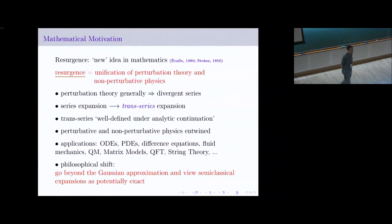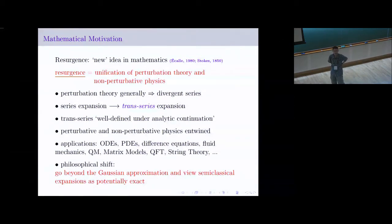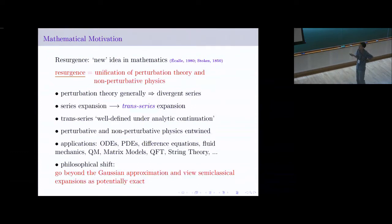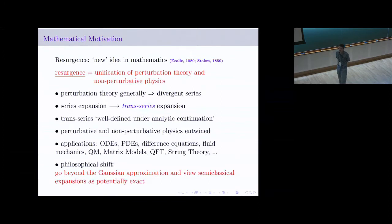There's also some mathematical motivation that may be less familiar. This funny word 'resurgence' — I'll explain where it comes from. It's a relatively new idea in mathematics on the timescale of mathematics. The name was coined by Jean Écalle in 1980, but really the birth of this idea came from Stokes and exactly the problem I just discussed. Stokes was trying to understand the Airy function for applications in optics.